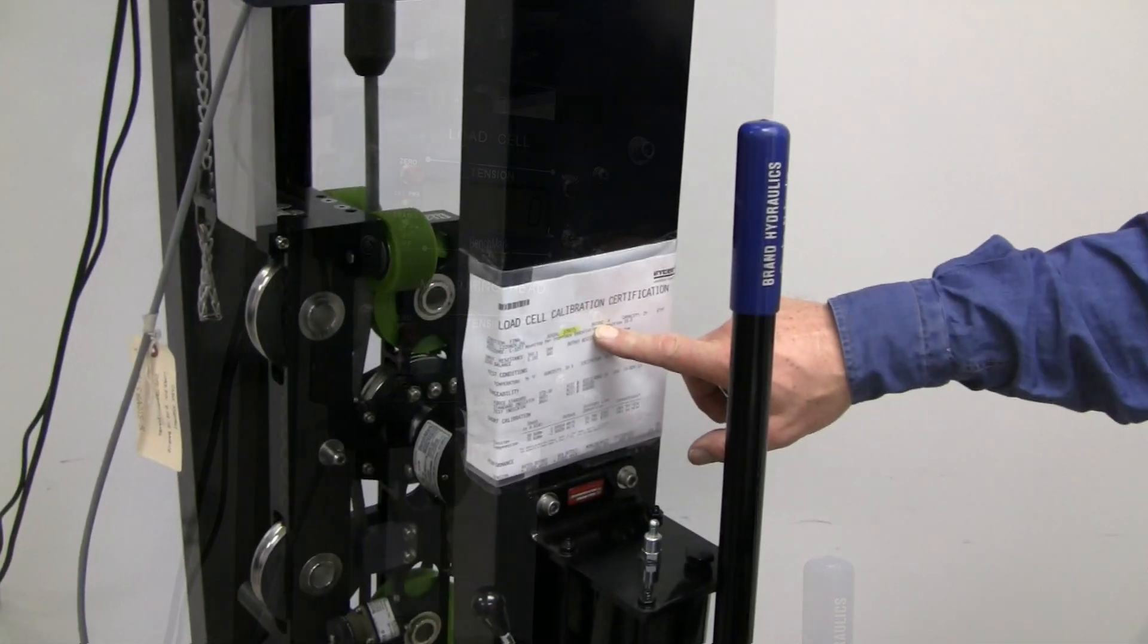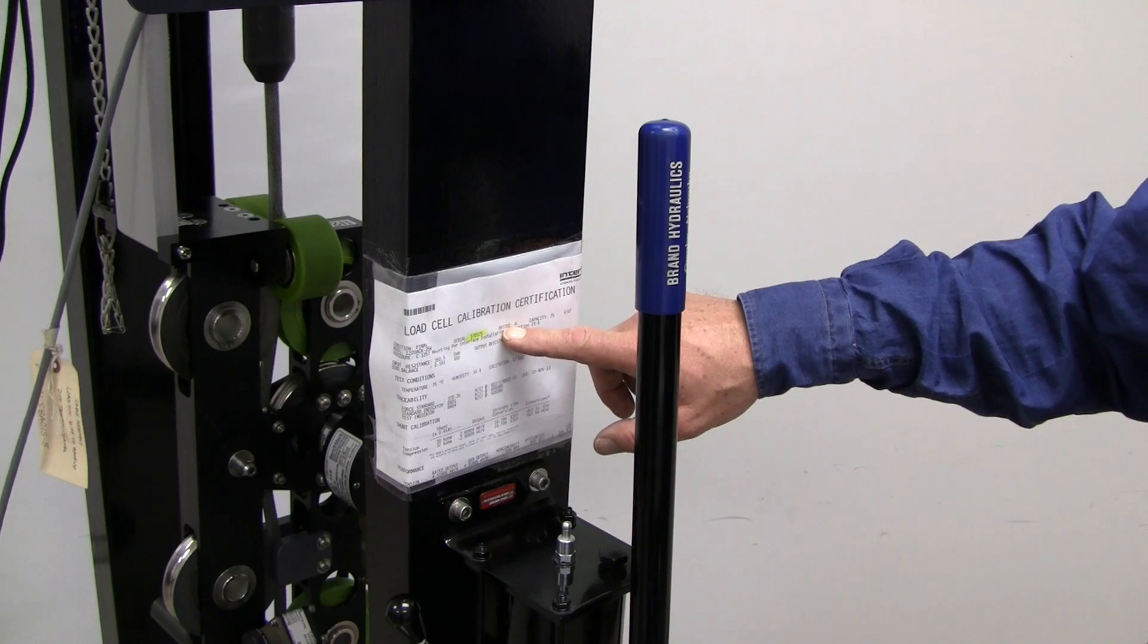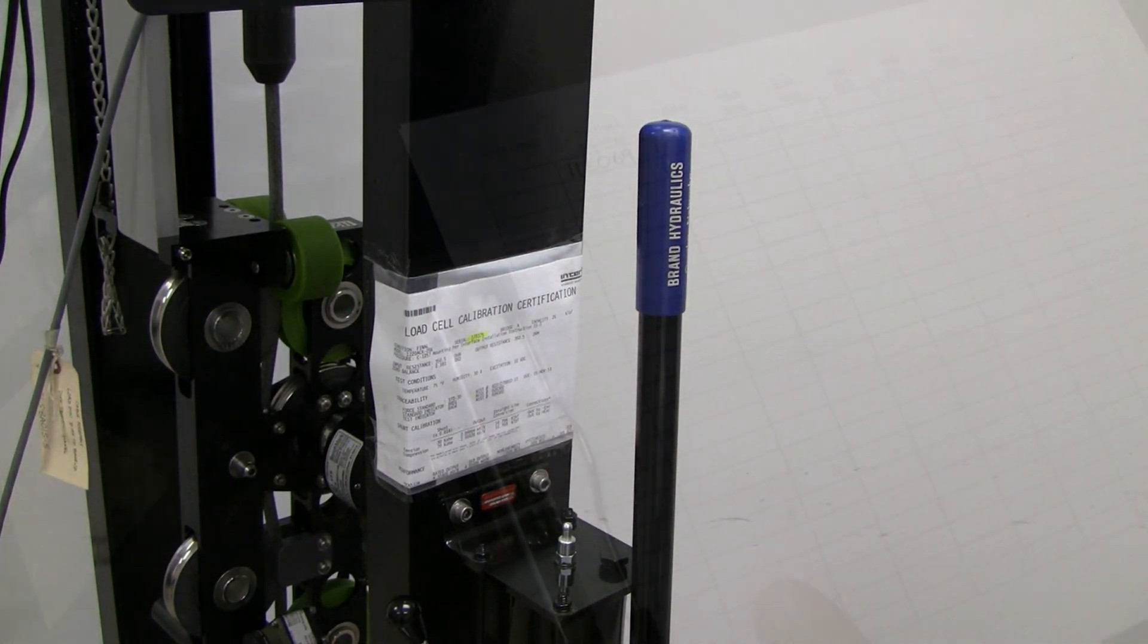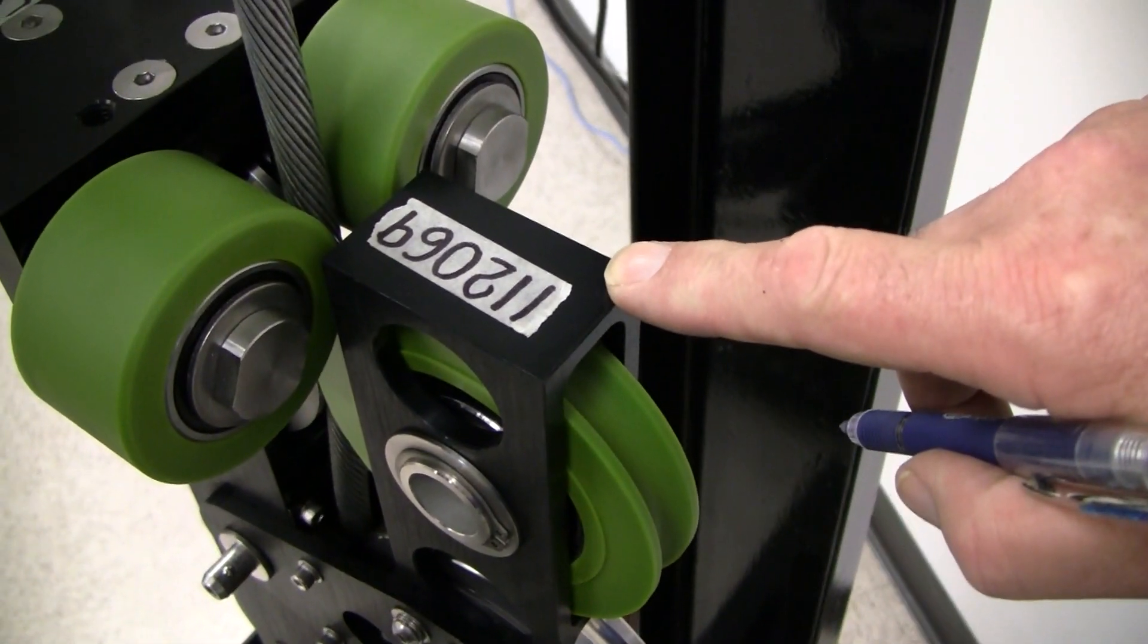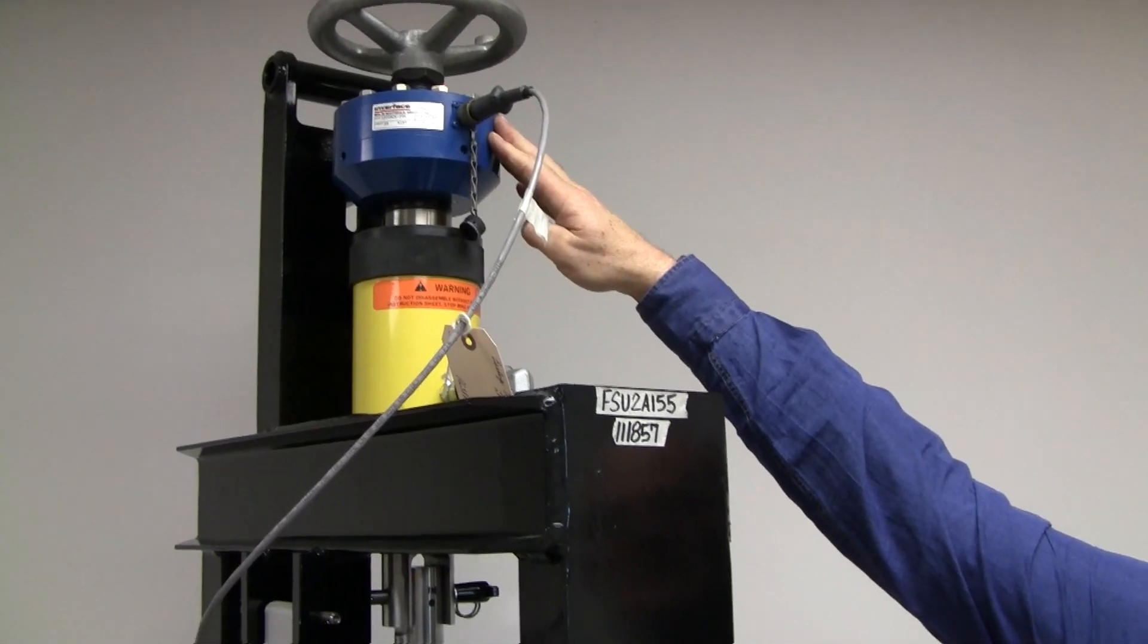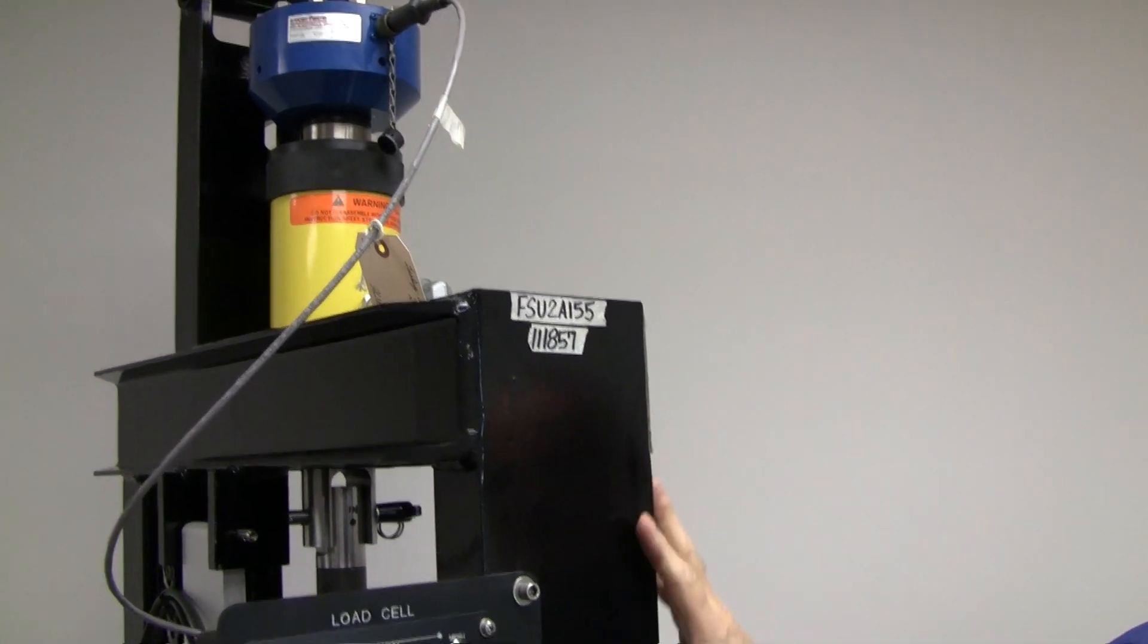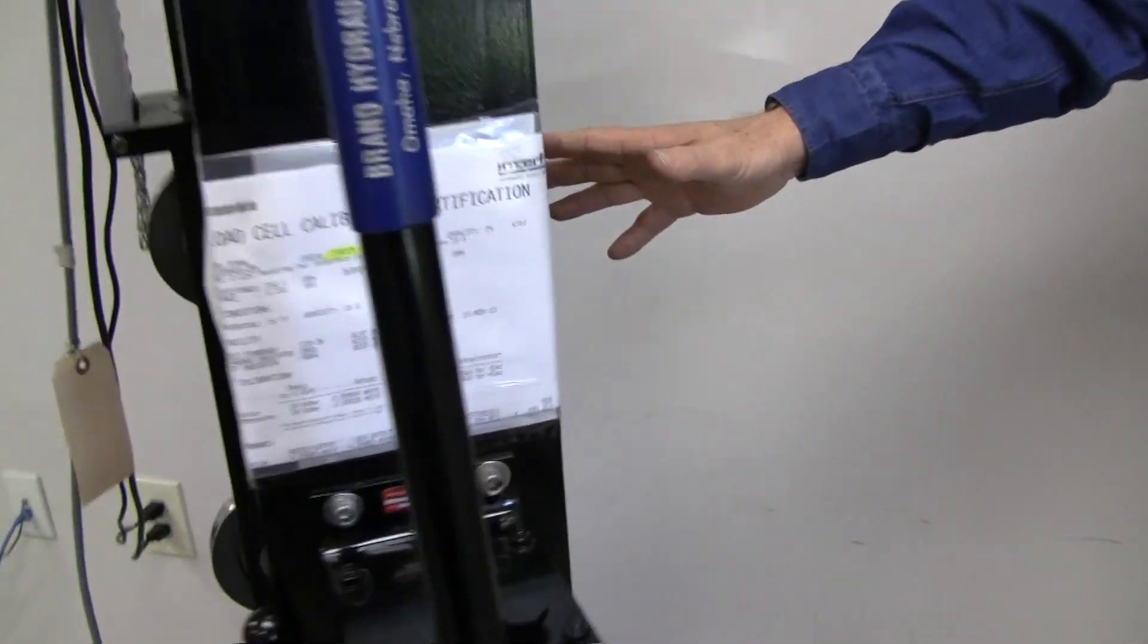The load cell is periodically certified for accuracy so the load pin is being compared with this certified load cell during the validation. We recommend that you record the results of these tests including the asset number of the measuring head and the test stand. To maintain traceability, the load cell is linked to the test stand through the measuring head and into the load pin.